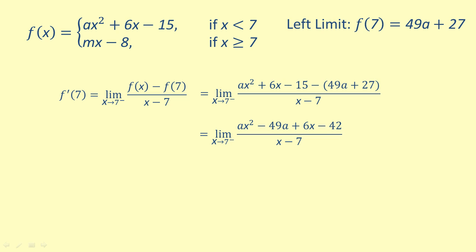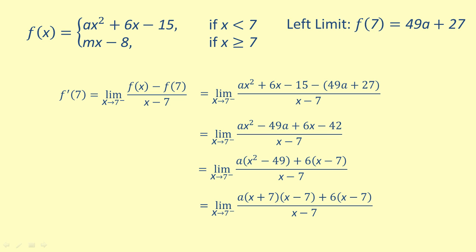We factor a out of the first two terms in the numerator and 6 out of the last two terms. This gives the limit as x approaches 7 from the left of a times the quantity x squared minus 49 plus 6 times the quantity x minus 7, all over x minus 7. We now factor x squared minus 49 as the quantity x plus 7 times the quantity x minus 7. The numerator and denominator share a common factor of x minus 7, which cancels. Using what we know about limits, the left limit of the derivative f prime of 7 equals 14a plus 6.